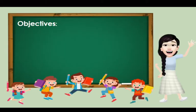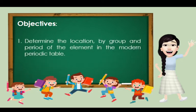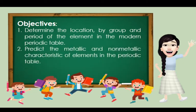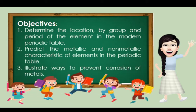We have the following specific objectives. At the end of this lesson, you should be able to: first, determine the location by group and period of the element in the modern Periodic Table; second, predict the metallic and non-metallic characteristics of elements in the Periodic Table; and last, illustrate or show ways to prevent corrosion of metals.